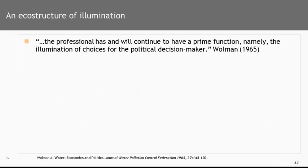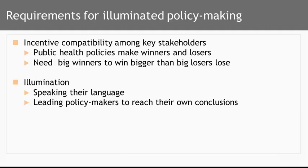What Wallman writes about in his memoirs is an echo structure of illumination. He believes that the professional illuminates — that the professional has and will continue to have a prime function, namely the illumination of choices for political decision makers. What are the requirements for illuminated policy making? Wallman established that one has to understand the key stakeholders and find incentives that are compatible with their incentives. Public health policies almost always make some winners and some losers, and we need the big winners to win bigger than the big losers lose.